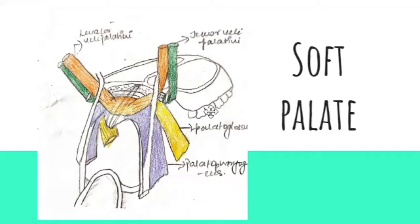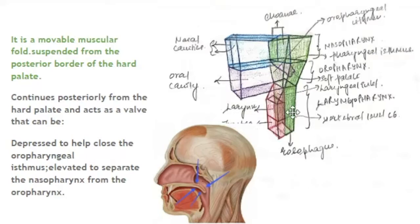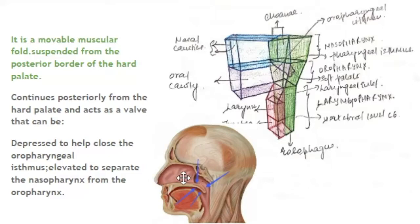Hello and welcome back to the channel. In this video we are going to talk about the muscles of the soft palate. Before we begin, let's look at the different compartments of the nasal cavity and the oral cavity. When we view it laterally, we can see that superior to the oral cavity lies the nasal cavity, and posterior to these are the nasopharynx and the oropharynx.